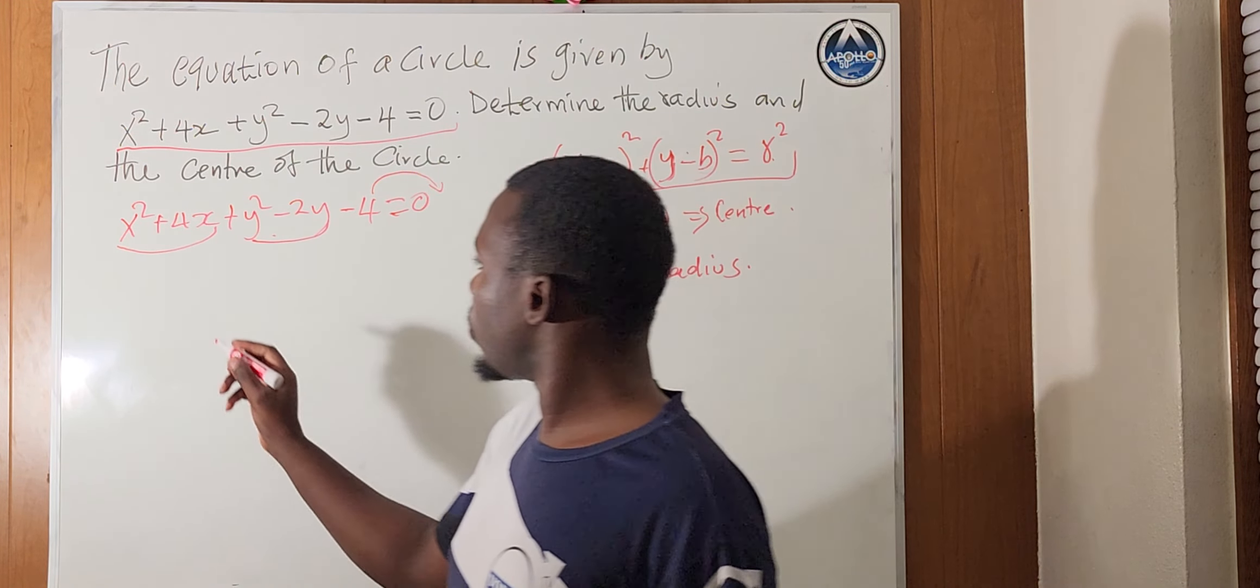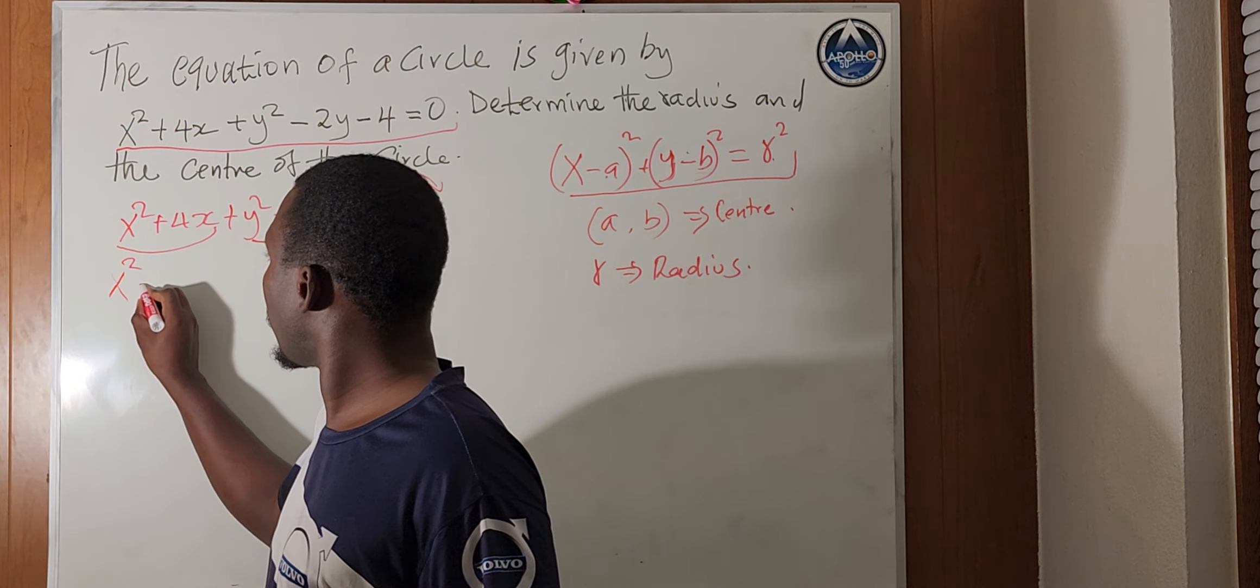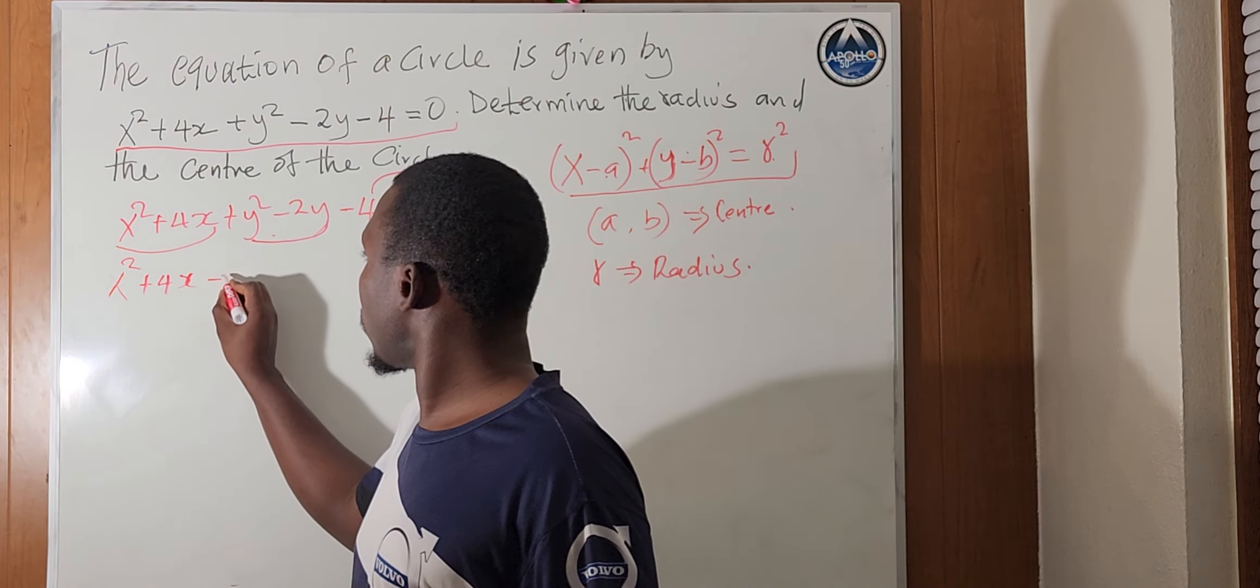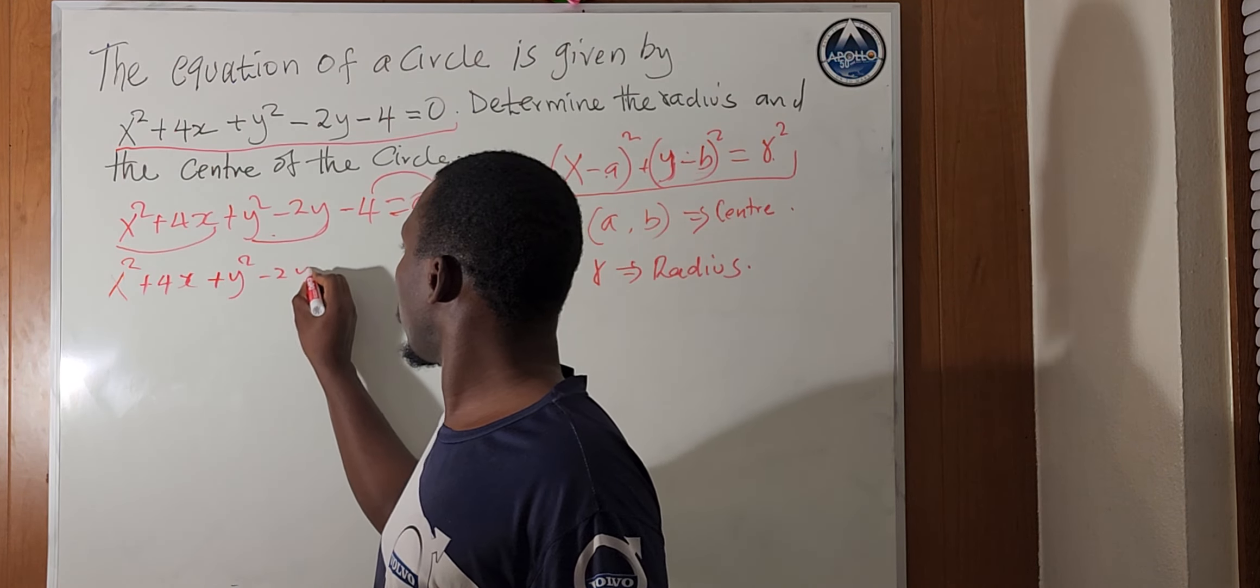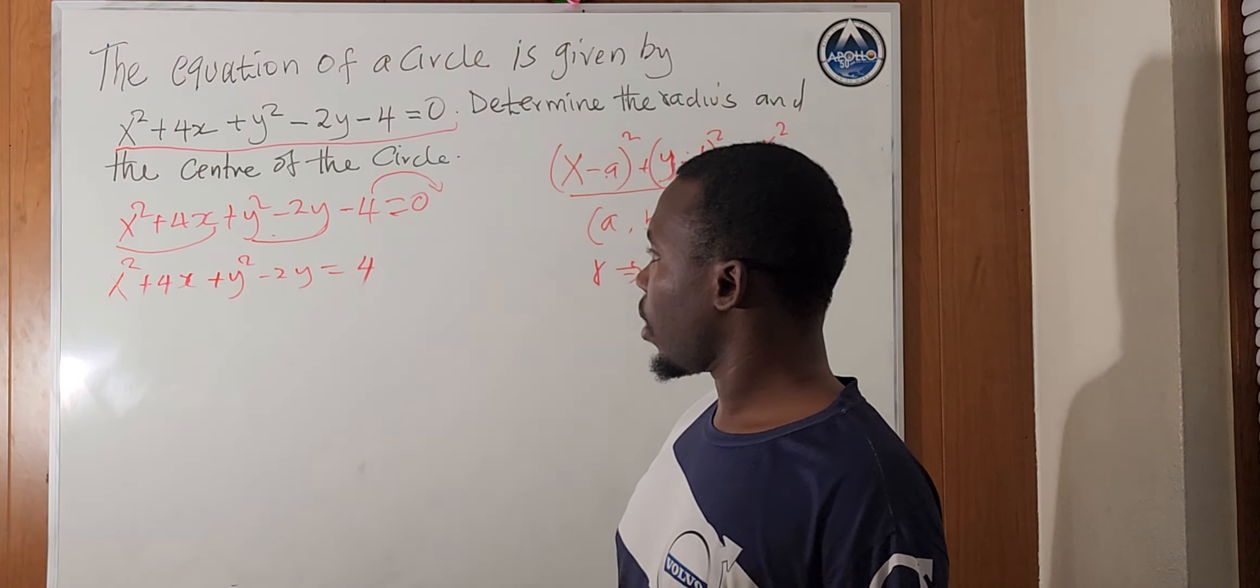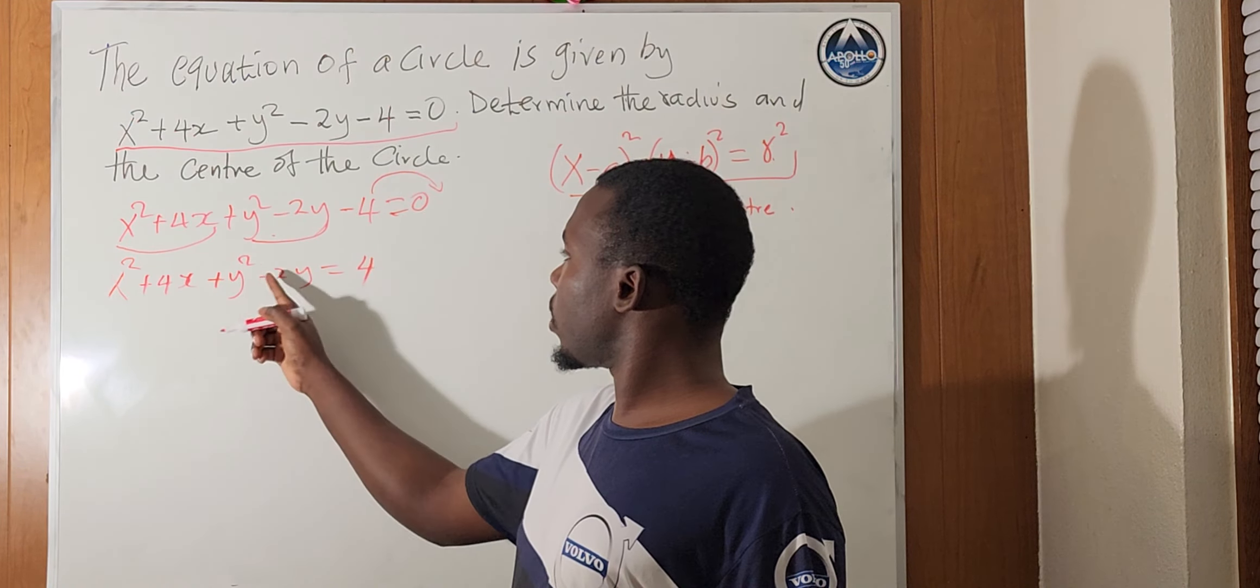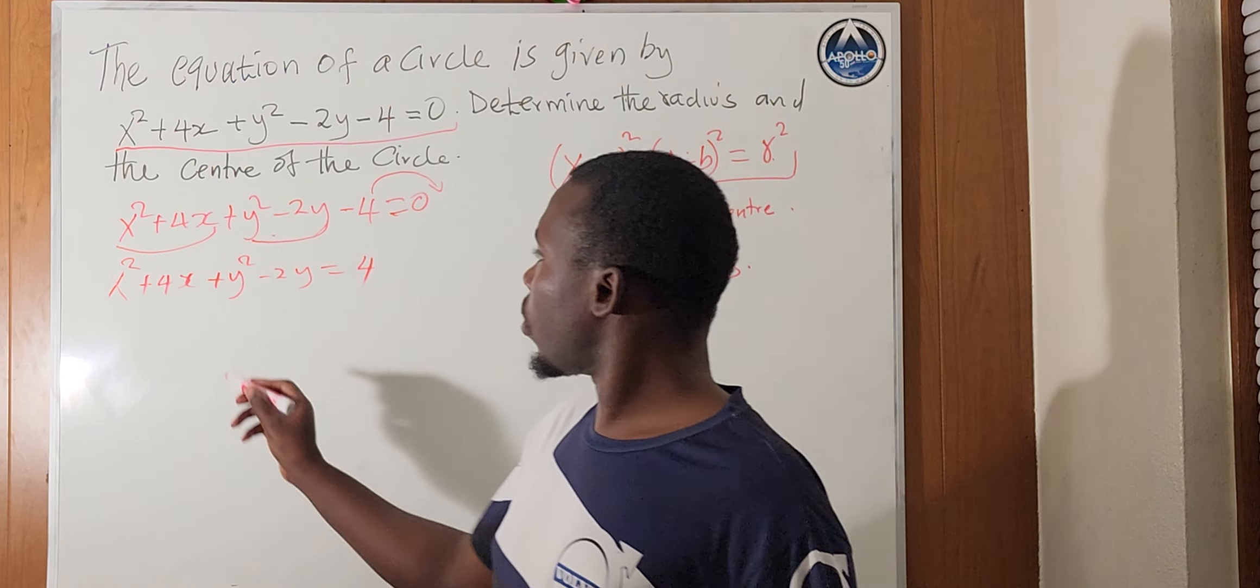So, this will be equal to x squared plus 4x plus y squared minus 2y equals 4. So, we can complete square method for each part here on the right-hand side and the left-hand side of this question.